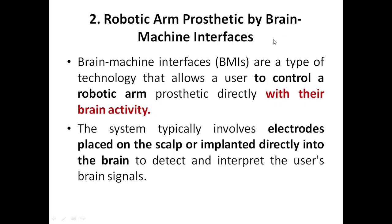Next, robotic arm prosthetics can also use brain machine interface, or BMI. BMI is a type of technology that allows the user to control a robotic arm prosthetic directly with their brain activity — no muscle movement is involved. You directly record the brain's activity and based on that, the robotic arm works. For example, if I think in my brain that I want to hold this phone, the prosthetic arm should be able to hold it. That is why it is called brain machine interface.